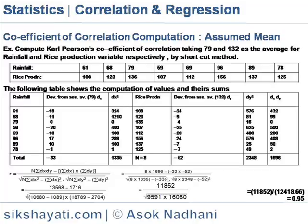The table shows rainfall in the first row and rice production in the second row. These values are entered into the table: the first column contains the rainfall values. The second column shows dx, the deviation from the assumed mean of 79 for the x variable. The third column shows dx², the square of the deviation from the assumed mean of the x series.